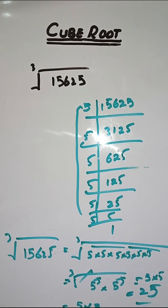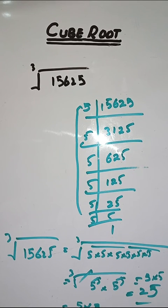So the cube root of 15,625 is equal to 25. So 15,625 is the cube of 25. I hope you have understood everything. If you have any doubt you can ask in the comment section. Thank you.